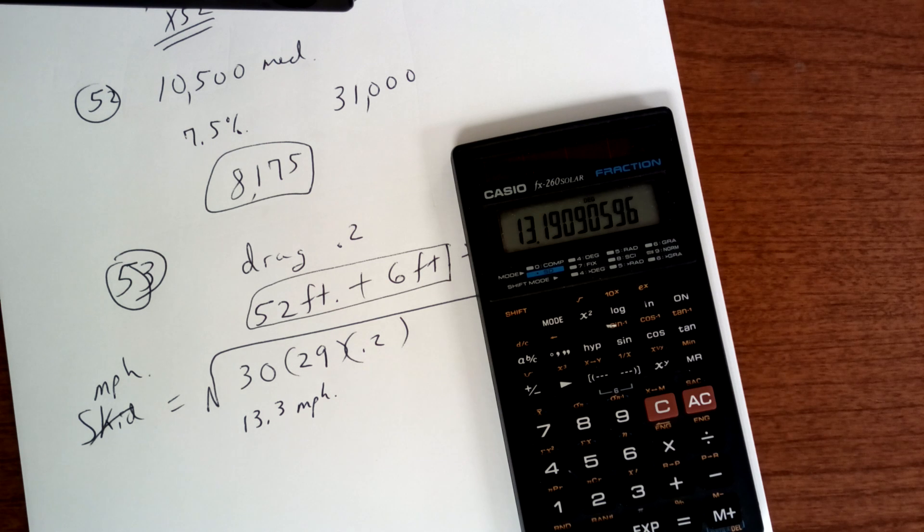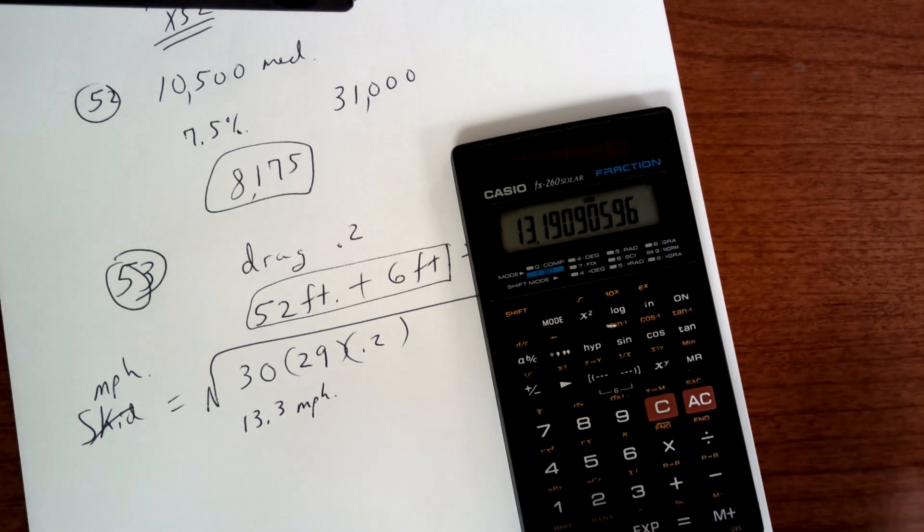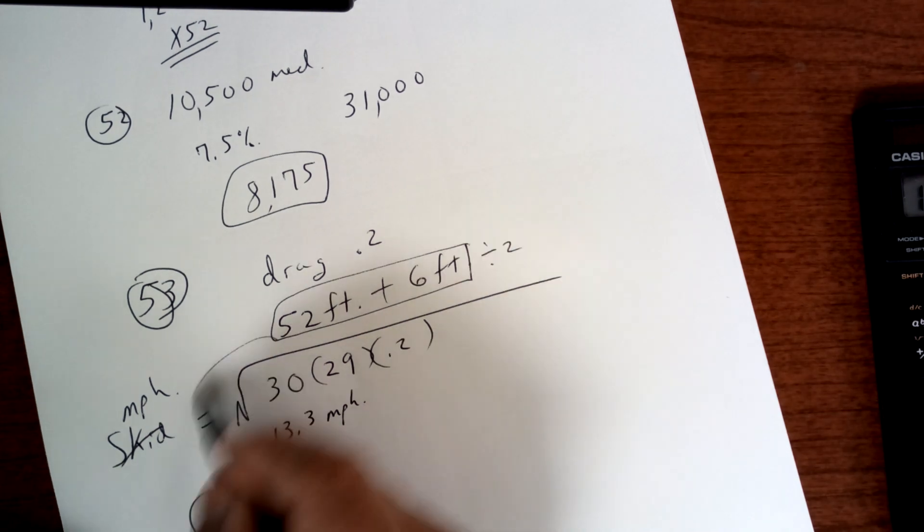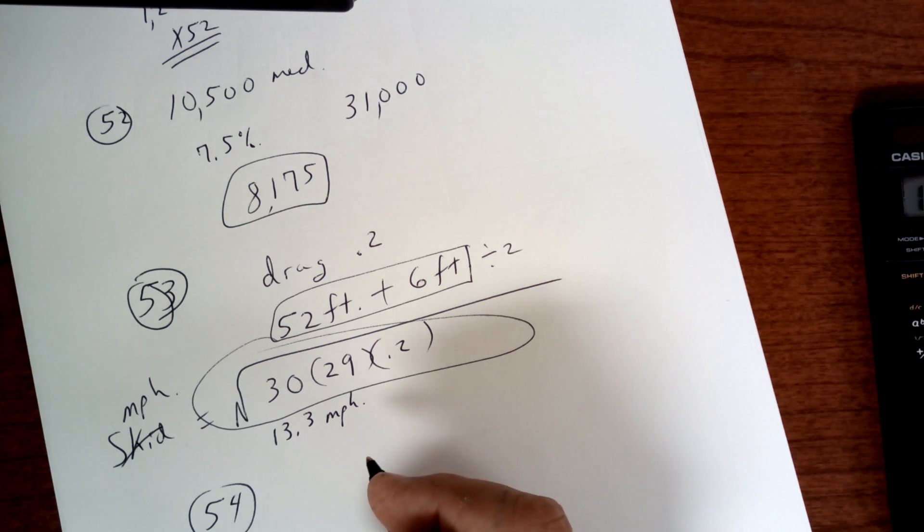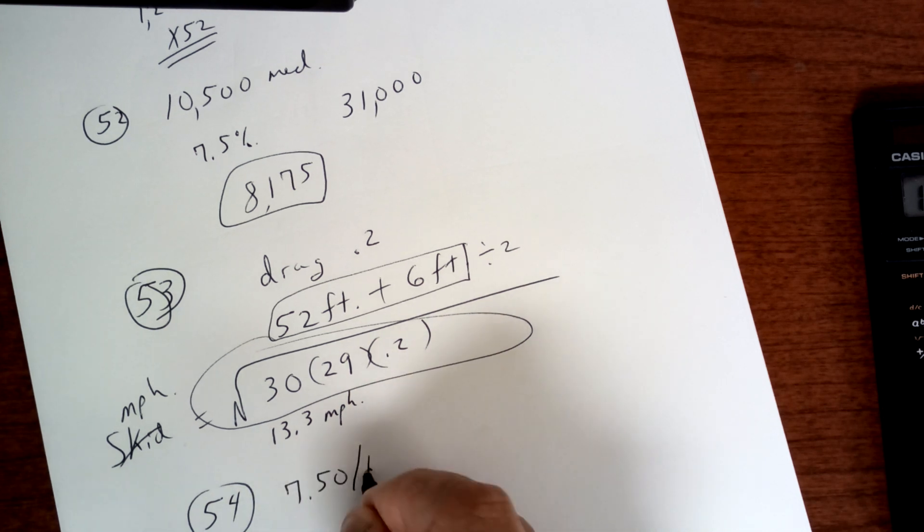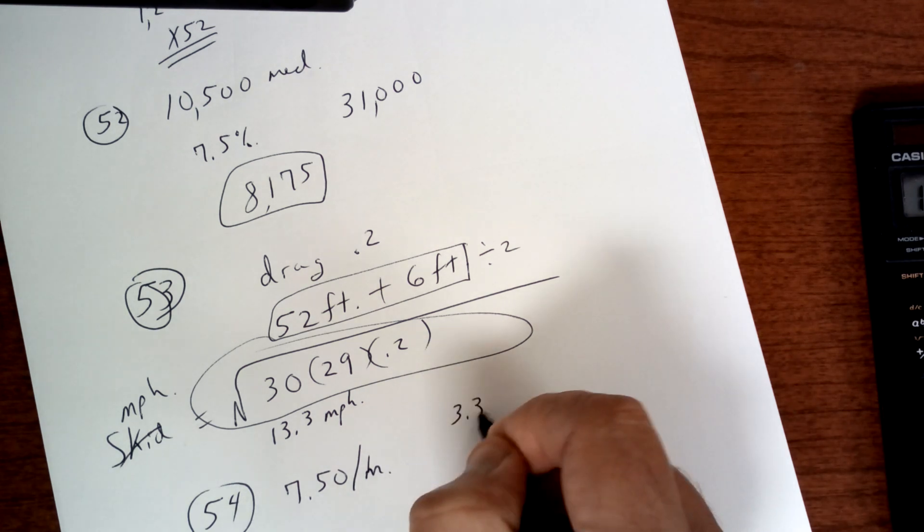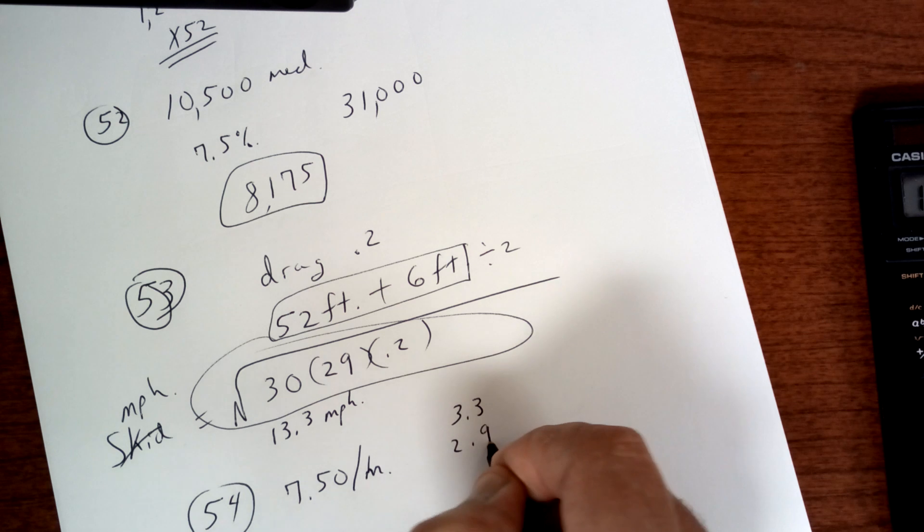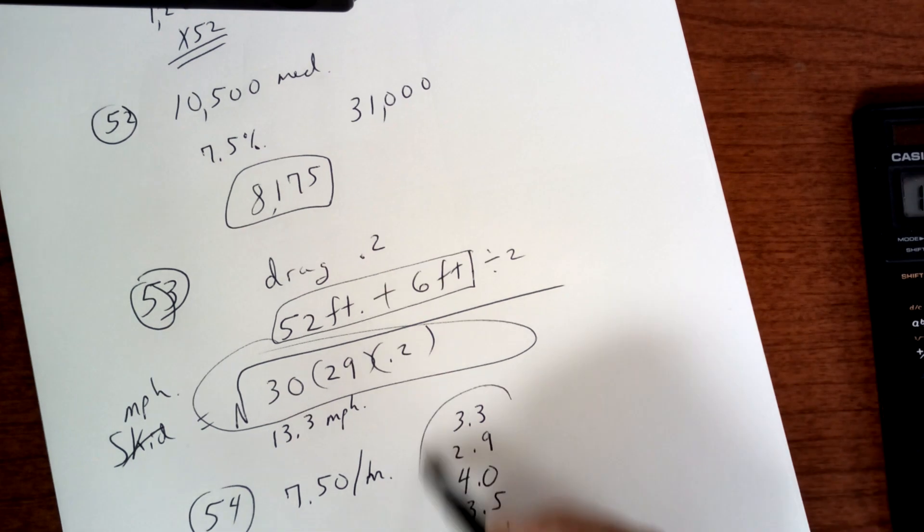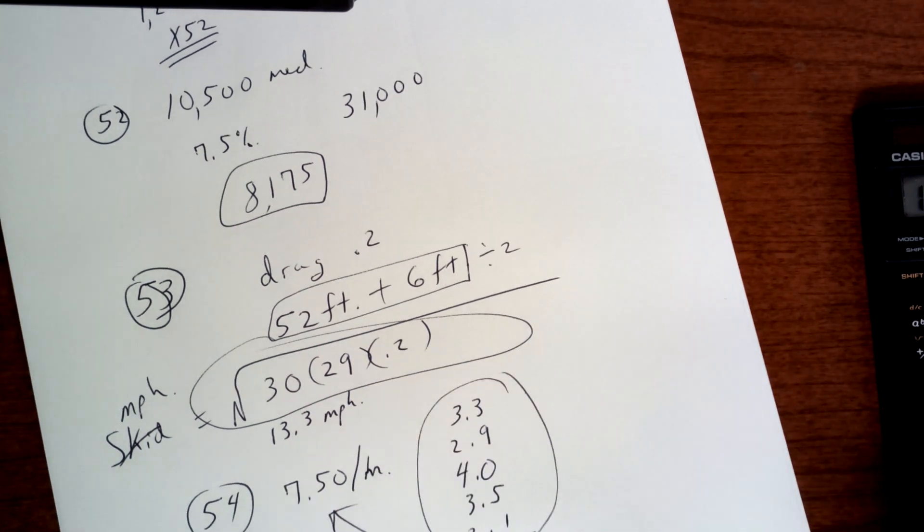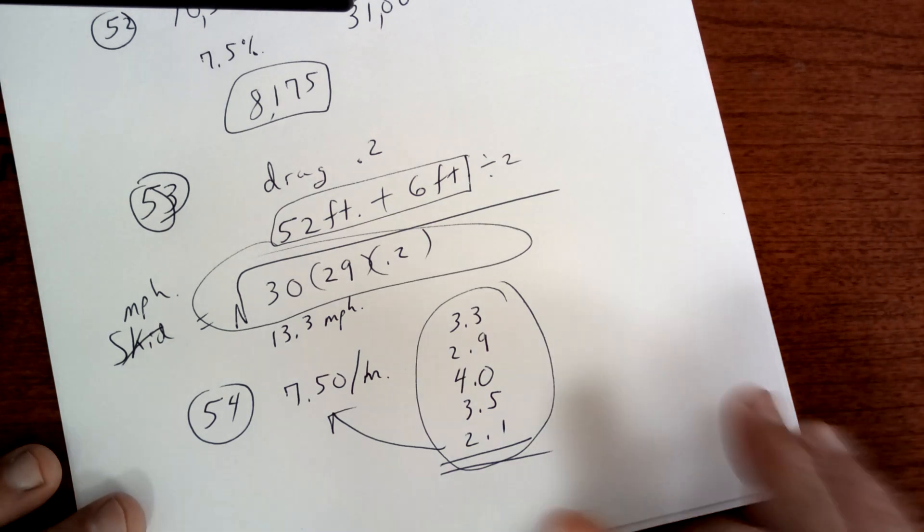Okay, all right, let's keep moving. Number 54. Make sure you memorize this formula here. She works part-time at a bakery. She gets $7.50 an hour. In the past five days, she has these on her time card. So $7.50 an hour, and 3.3 hours, 2.9 hours, 4 hours, 3.5 hours, and 2.1 hours. So what you're going to do is add up her hours times how much she gets paid for all. That one should be pretty easy, 54. Let's go to 55.